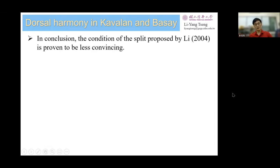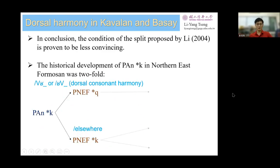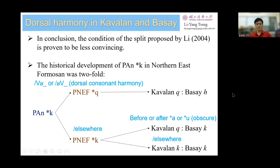In conclusion, Li's proposed condition of the split is proven to be less convincing. The historical development of Proto-K in Northern East Formosan was actually twofold. First, from Proto-Austronesian to Proto-Northern East Formosan, it splits because of the dorsal consonant harmony. Second, Kabbalan has a further split of K from Proto-Northern East Formosan-K.